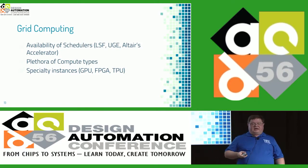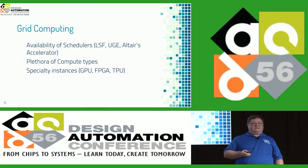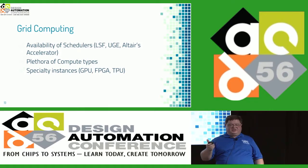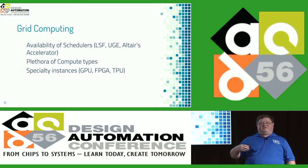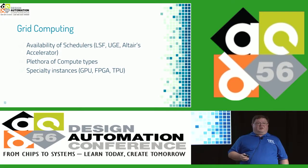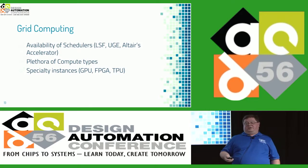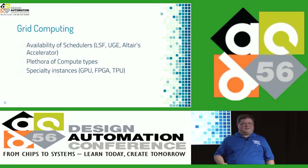We'll start with grid computing. The good news: you've got availability of schedulers — LSF, UGE, Altair's Accelerator, Slurm — there are all kinds of solutions if you want to take the scheduler you're already using and bring it into the cloud. There is an absolute plethora of compute types: 4 gigs of RAM per processor, 8 gigs, 16 gigs — you've got all kinds of choices, no shortage of them. And there are specialty instances we don't make use of a lot yet but really should start looking at more — GPU instances, FPGA instances, TPUs.